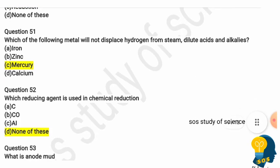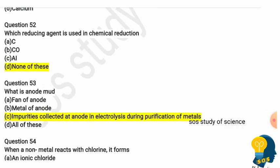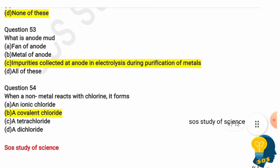Question 51: Which of the following metals will not displace hydrogen from steam, dilute acids, and alkalis? Options are iron, zinc, mercury, and calcium. The correct answer is mercury — mercury will not displace hydrogen gas from steam, dilute acids, or alkalis. Question 52: Which reducing agent is used in chemical reduction? Options are carbon, carbon monoxide, aluminium, and none of these. The correct answer is none of these. Question 53: What is anode mud? The correct answer is: impurities collected at the anode in electrolysis during the purification of metals.